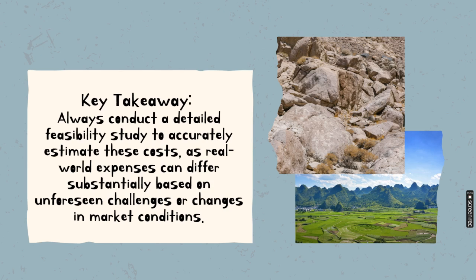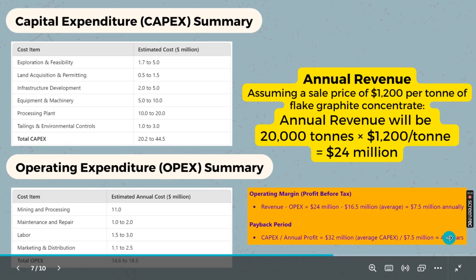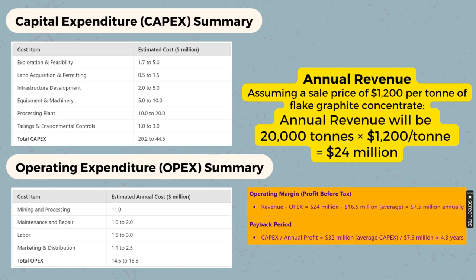Always conduct a detailed feasibility study to accurately estimate costs, as real-world expenses can differ substantially based on unforeseen challenges or changes in market conditions. But as far as graphite is concerned, especially in a Tanzanian setting, it is a very lucrative idea. After 5 years, for the remaining 15 years at a rate of 7 million dollars per year, total profit over those 15 years is approximately 105 million dollars — almost a billion.